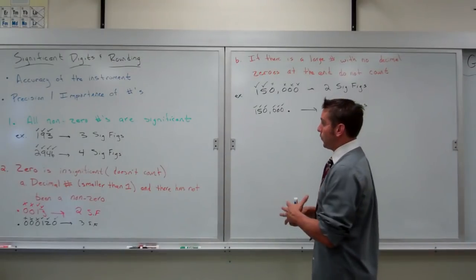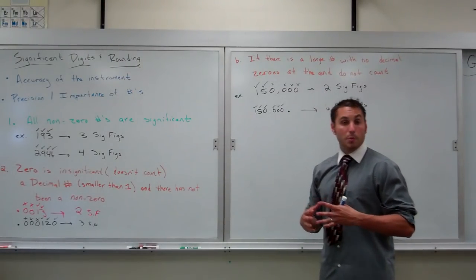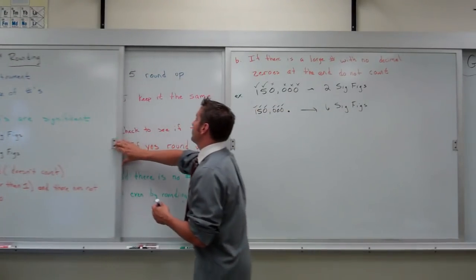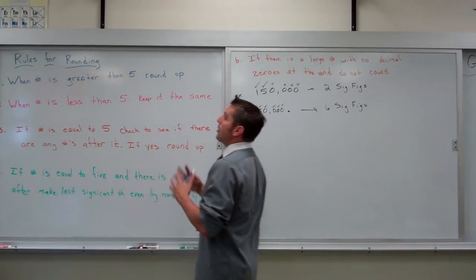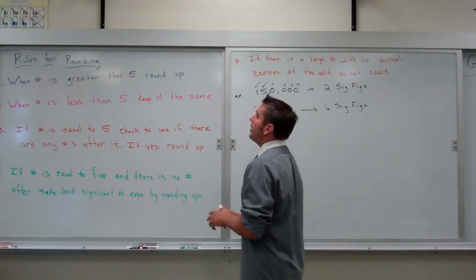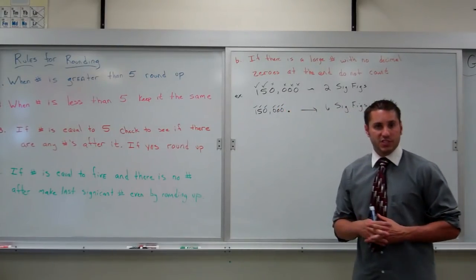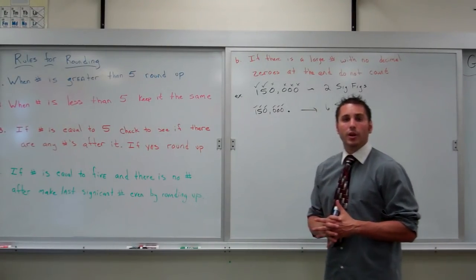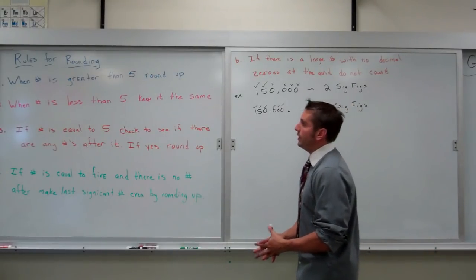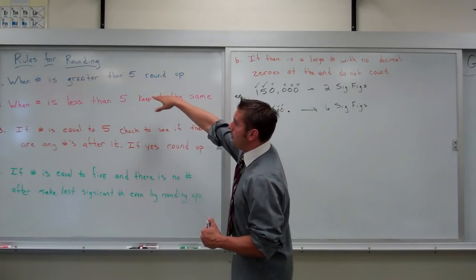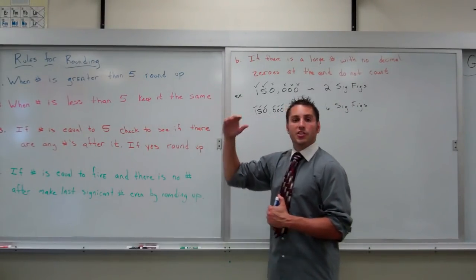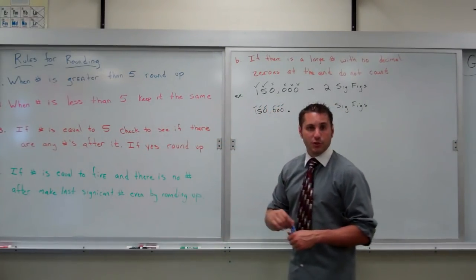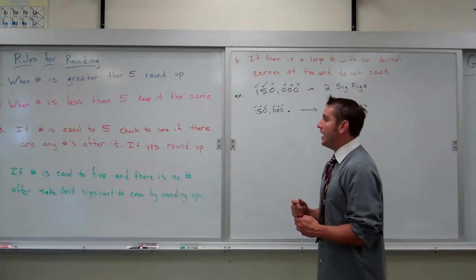There's a separate set of rules for rounding, and there's an overhead you can print out and copy into your notebook. Your general rules for rounding are as follows: once you have listed which numbers are significant, you look at the last significant digit and round appropriately. If the first number after your last significant digit is greater than five, the last significant digit rounds up. If it is less than five, it stays the same.